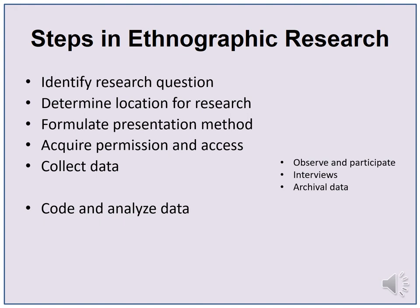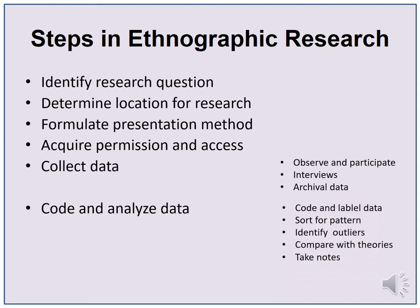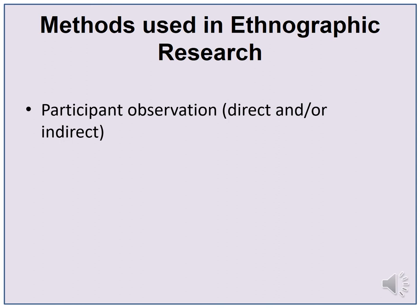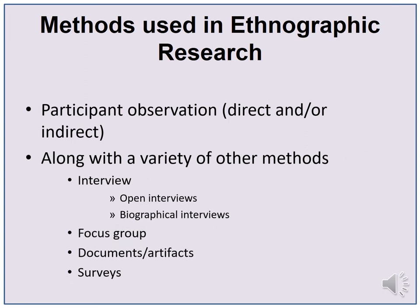The next step is to code and analyze data. Code your data in a way that makes the most sense of your observations. Coding and analysis of data includes labeling things you saw and heard, sorting for patterns, identifying outliers, comparing with theories, and taking notes of reflective remarks. The last step is to report your findings. Ethnography is a study of people in their own environment, mainly through the use of participant observation, along with a variety of other methods such as interviews, focus groups, documents and artifacts consultation, and surveys.